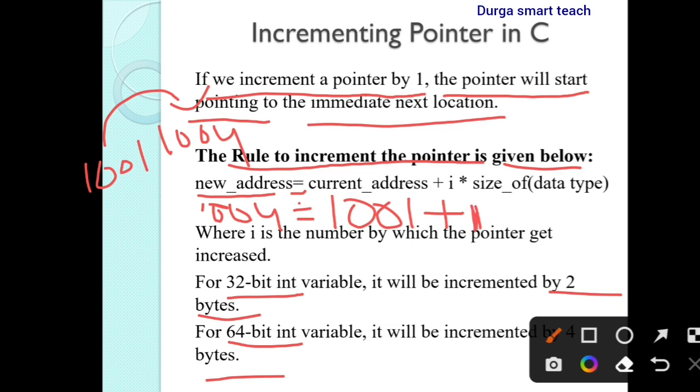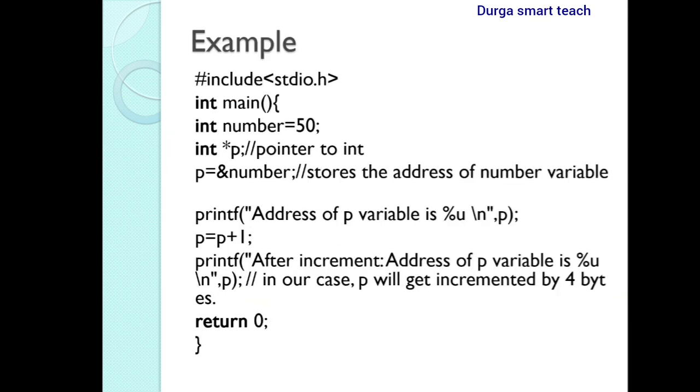For a 32-bit integer it takes 2 bytes, and for a 64-bit integer it takes 4 bytes. The rule to increment a pointer is: new address equals current address plus i times size of data type. So new address 1004 equals current address 1001 plus 1 times 4 bytes, which gives 1004.